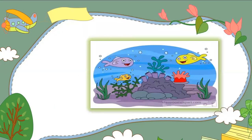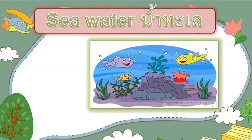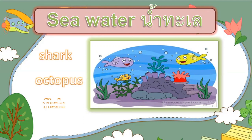What habitat is this? It is sea water. What other animals live in sea water? We have shark, octopus, fish, goldfish, seahorse, angelfish, and many other fish. They live in sea water.